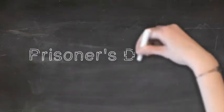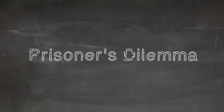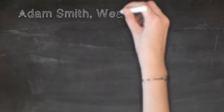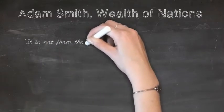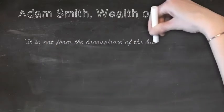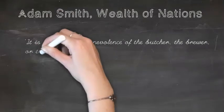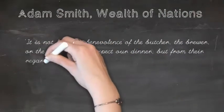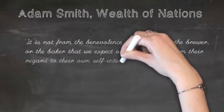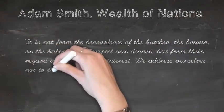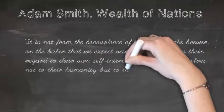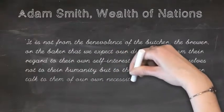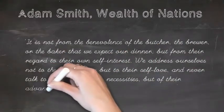In this class, we're going to talk about the prisoner's dilemma. Before introducing the dilemma, I want to read a quote from Adam Smith. 'It is not from the benevolence of the butcher, the brewer, or the baker that we expect our dinner, but from their regard to their own self-interest. We address ourselves not to their humanity, but to their self-love, and never talk to them about our own necessities, but of their advantages.'